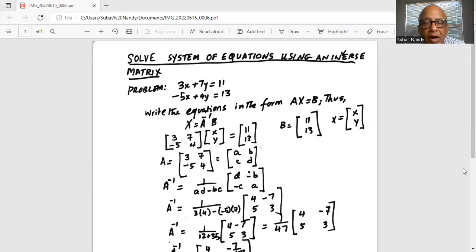The original matrix element B in the first row, second column becomes minus B. The original C in the second row, first column becomes minus C. The original D becomes A. So A and D have changed positions, whereas B and C have acquired an additional minus sign.